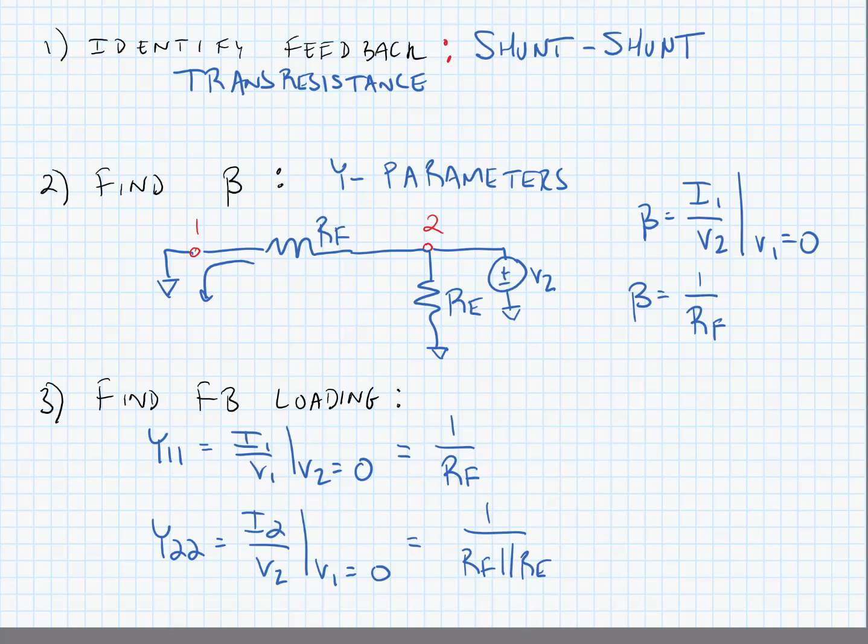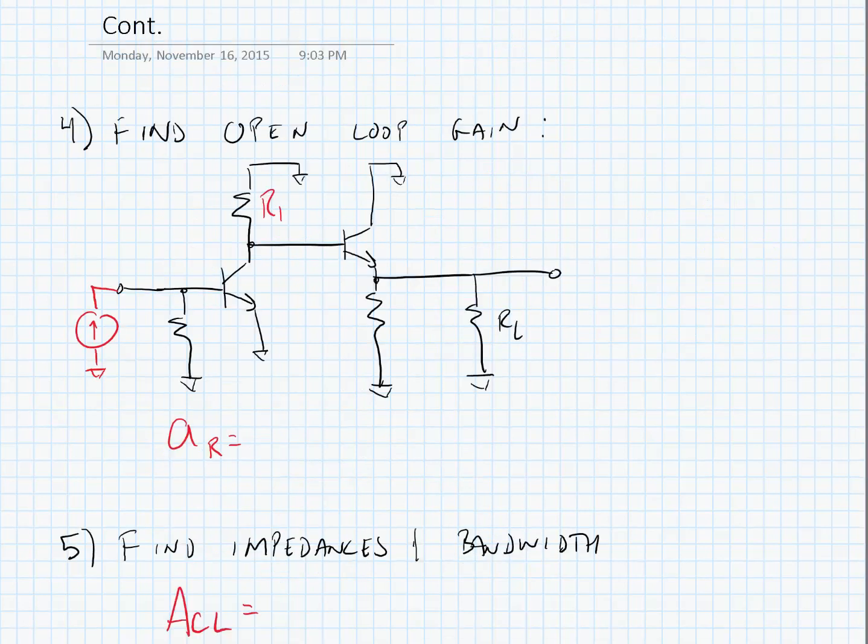Now we're going to take these parameters and put them on our open-loop circuit. Here's our open-loop circuit. We're going to put a resistance 1 over y11 on the input and a resistance 1 over y22 on the output. We're going to calculate the gain, actually vout over iin.